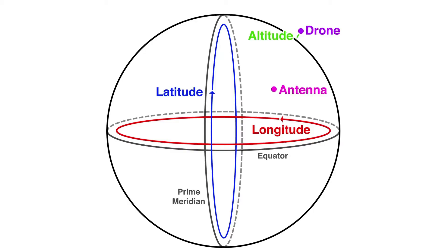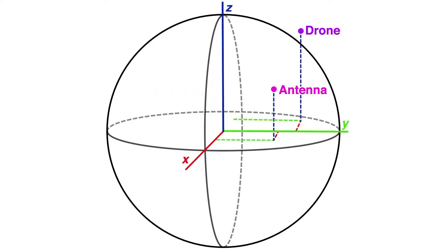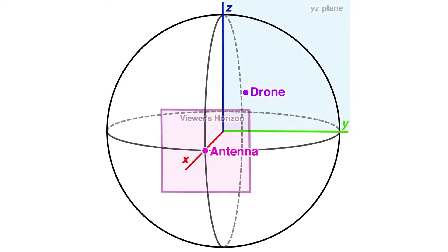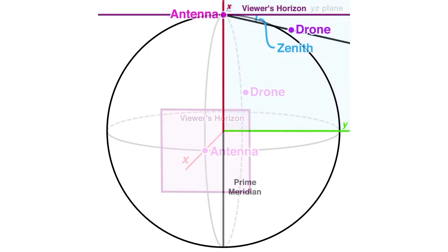To ensure the antenna tracker would closely follow the drone, we developed a high-level algorithm to calculate the azimuth and zenith angles the antenna tracker should face. First, we convert the drone and antenna tracker's GPS coordinates to Cartesian XYZ coordinates, where each coordinate corresponds to the distance from the Earth's center on that respective axis. Next, these points are rotated by an appropriate amount such that the antenna tracker's coordinate lies on 0 degrees north and 0 degrees west. This is done because at 0 degrees north and 0 degrees west, the viewer's horizon is parallel with the YZ plane, which helps with zenith angle calculations. Once this rotation has been done, the azimuth and zenith angles can easily be found through some basic trigonometry.